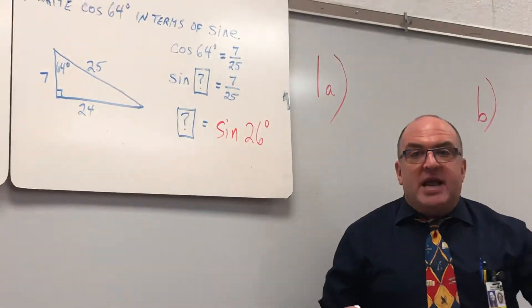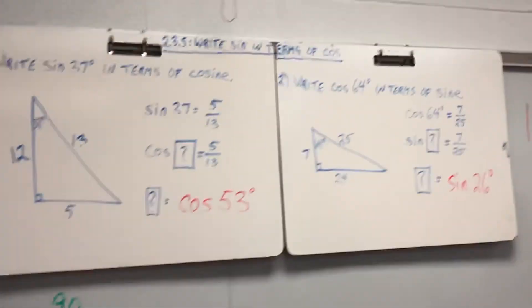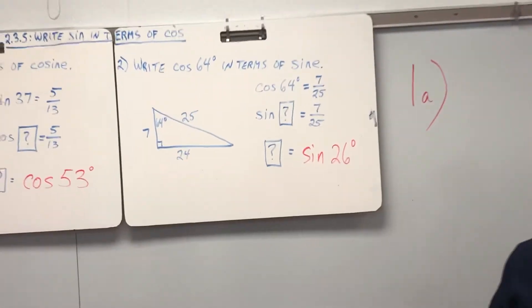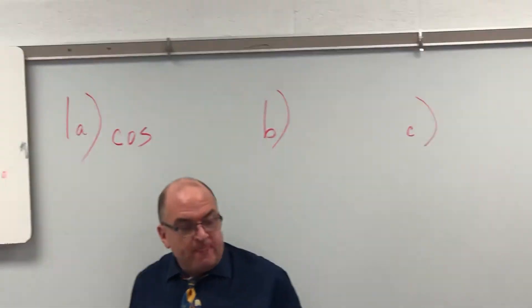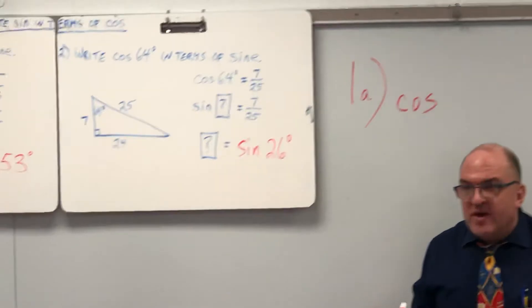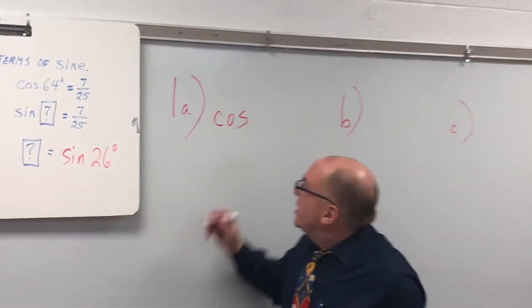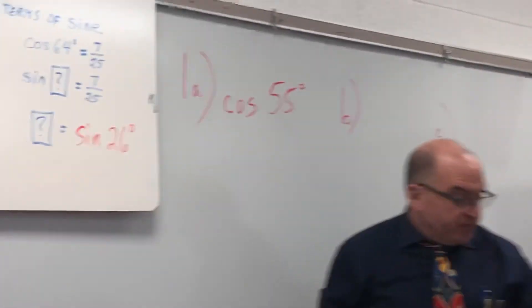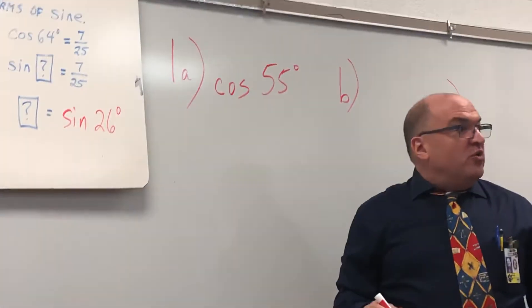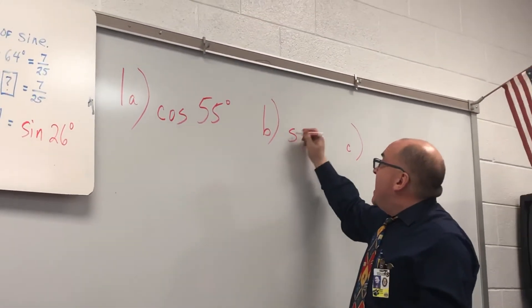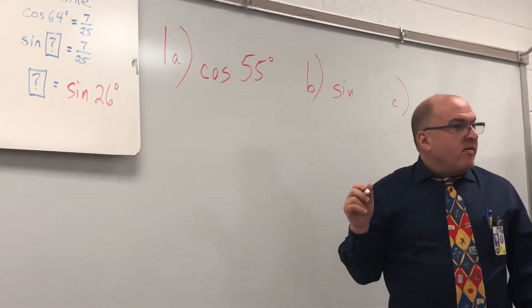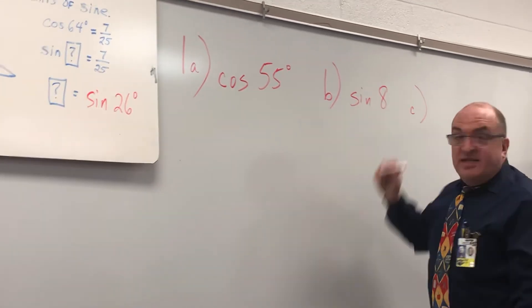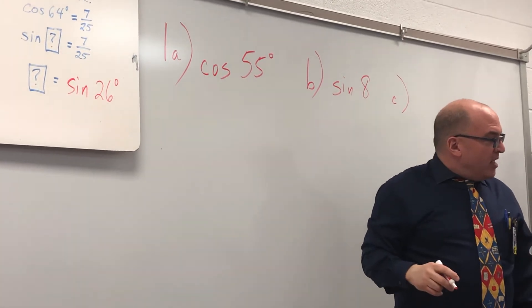Look at your paper right now. Look at 1A — it says sine 35. Sine 35 is the same as cosine what? 55. Why? You took 90 minus 35, right? Cosine 55. What's cosine 82? Cosine 82 is sine what? 8. Why? Because it's 90 minus 82. All of these is always 90 minus — all of them. But you also have to write the other function.